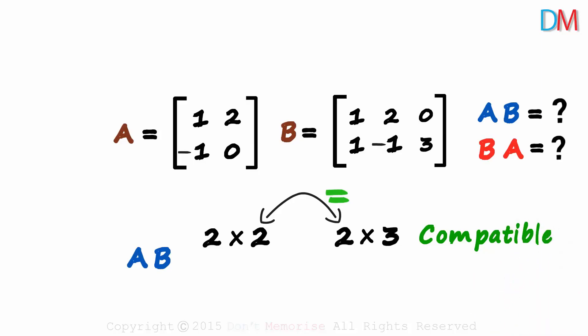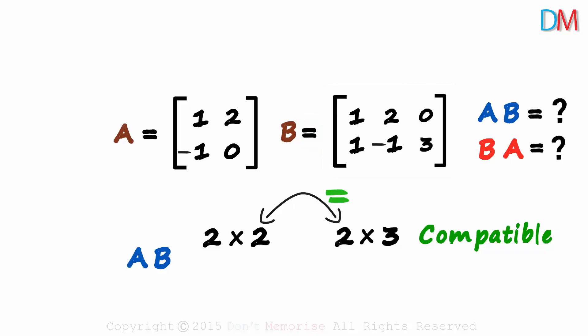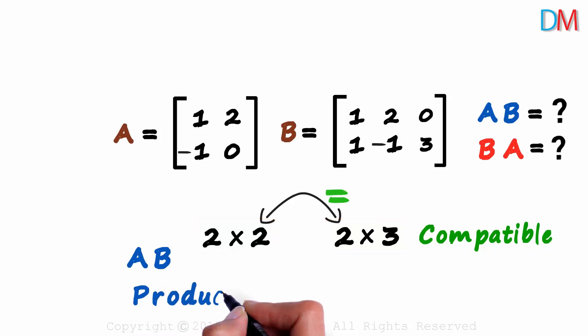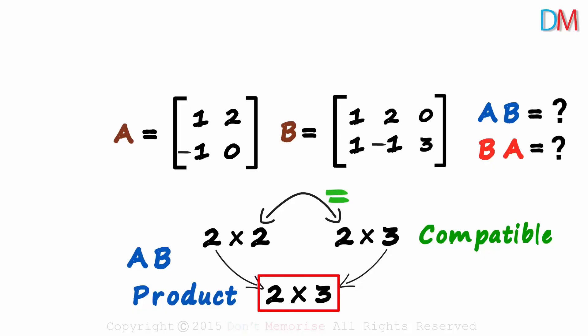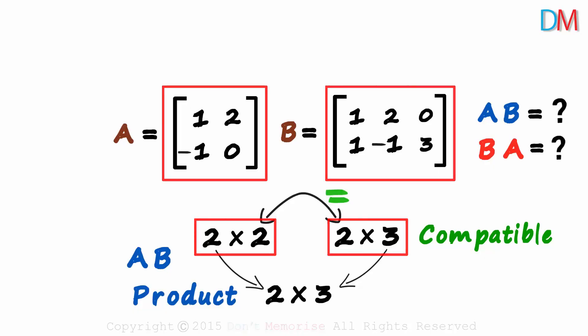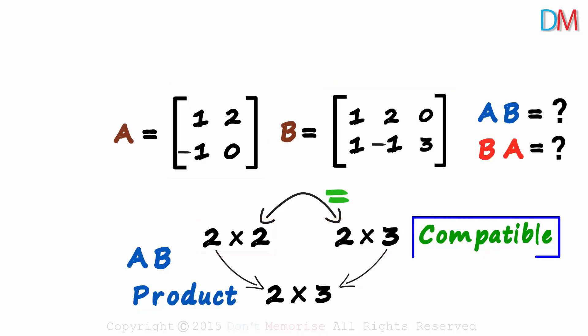As discussed in the previous session, we could have just counted the number of columns of the first matrix and compared it to the number of rows of the second. But why is it a better idea to find the full orders of the matrices? Because this also gives us the order of the resulting product. The first number is two and the fourth number is three, so the resulting product will be two by three. They not only tell us compatibility but also the order of the resulting product.